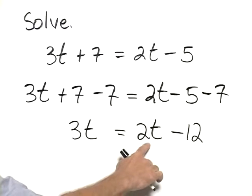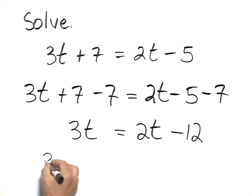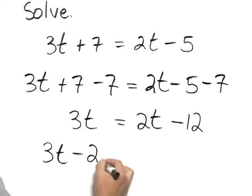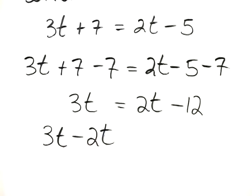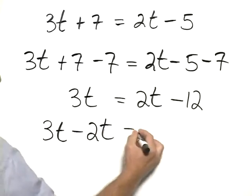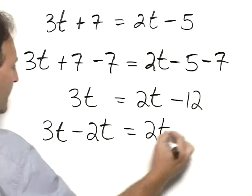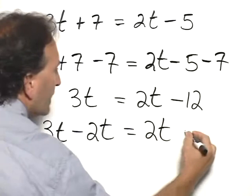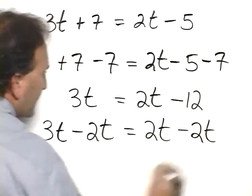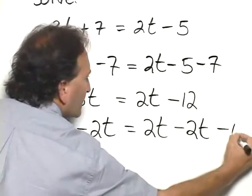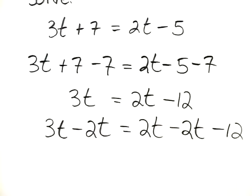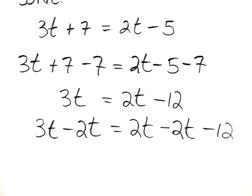Next, we would add a negative 2t to both sides. And so we have 3t plus a negative 2t, and on the right-hand side we have 2t, and then I'm going to put it right here, adding a negative 2t, and then we still have adding the negative 12 on the right-hand side.